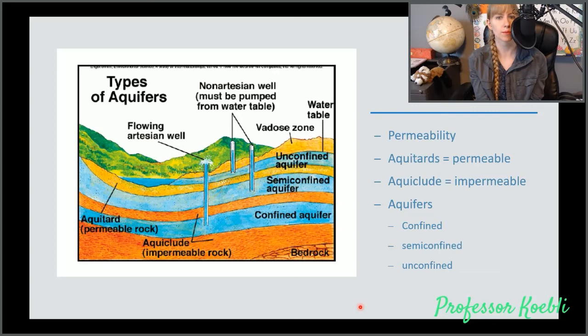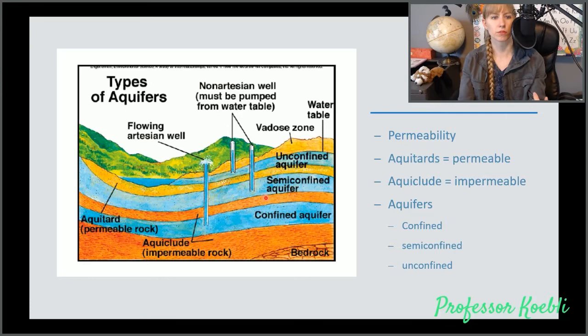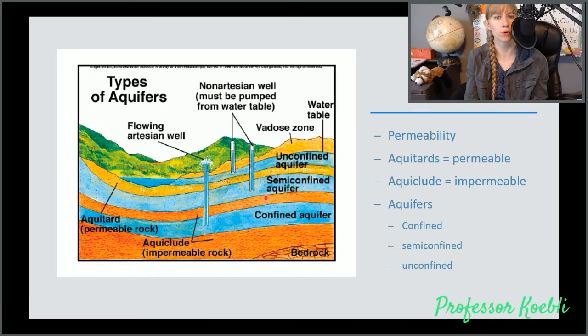Depending on the permeability of the rock, you can either have an aquitard, which is a permeable layer of sediment, an aquiclude, which is impermeable, which can lead to many different types of aquifers, which are confined, semi-confined, and unconfined. A confined aquifer will be surrounded on both sides by an aquiclude. A semi-confined aquifer will have an aquiclude on the bottom or impermeable rock and on top will be an aquitard or permeable rock. An unconfined aquifer will have on the bottom permeable rock and then permeable rock.